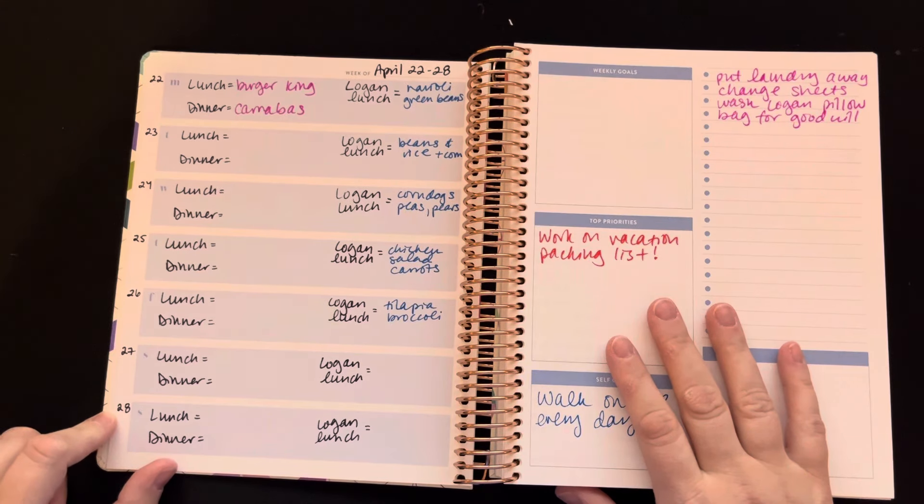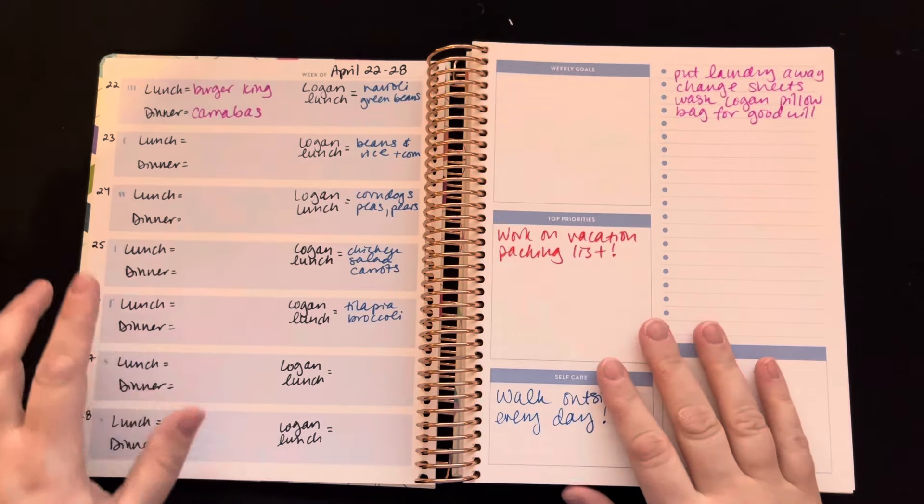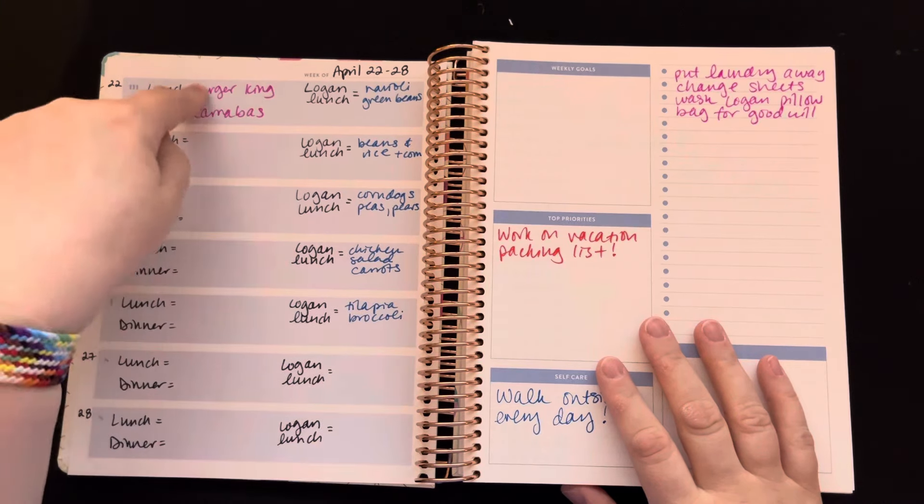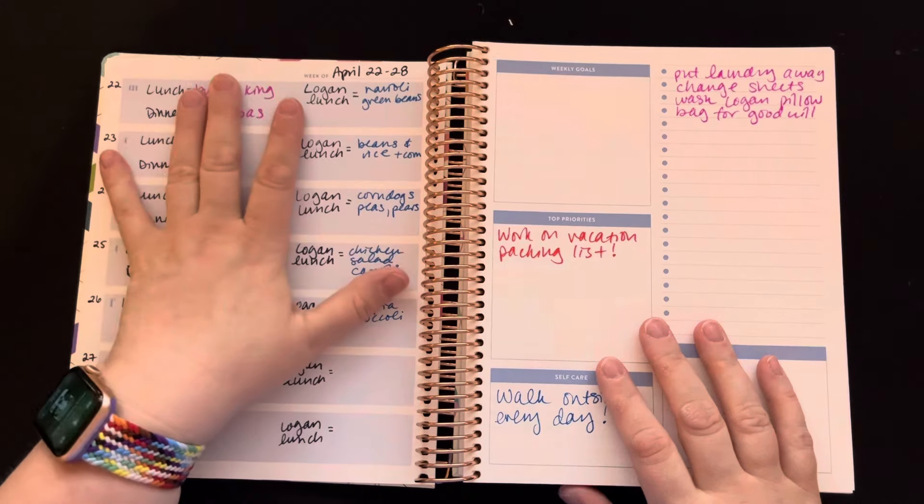I don't know that it actually matters. I never know what date it is. I think today's the 23rd. I have no concept of time. And then my son, I put his meals that he has at daycare for the week and then list out dinners and lunches for me to track them.